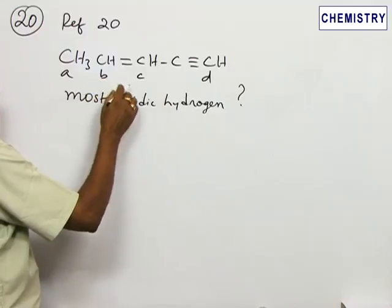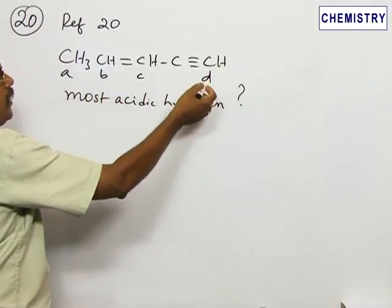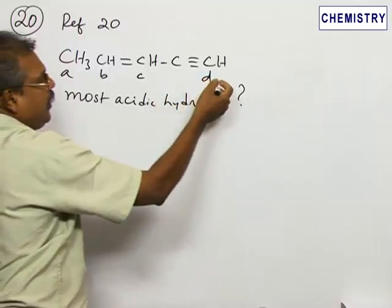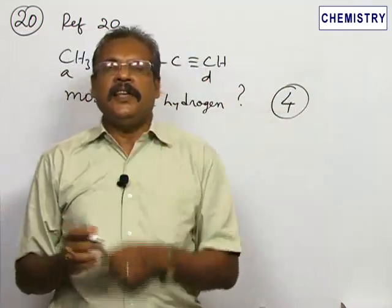...the hydrogen D must be more acidic. So the answer is D, and this is given by option 4. So better select option 4, that is D.